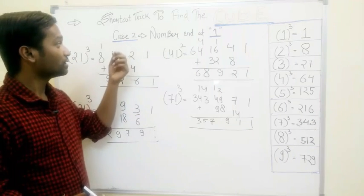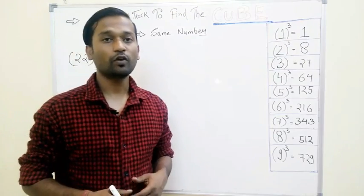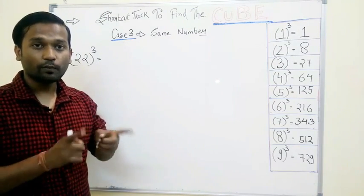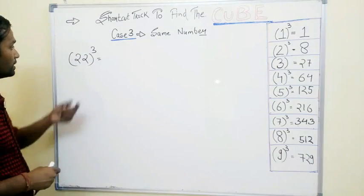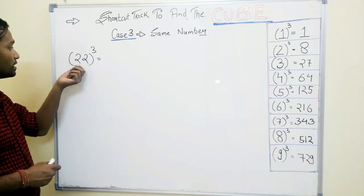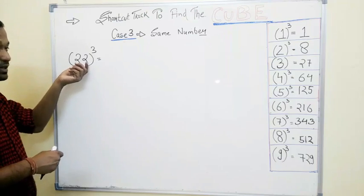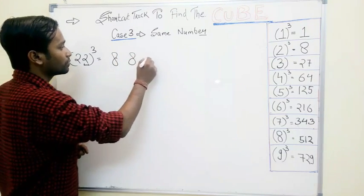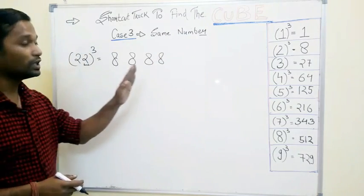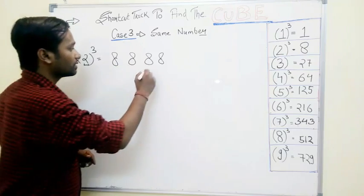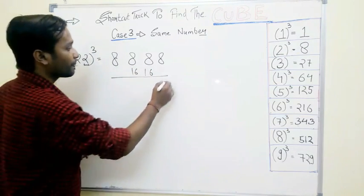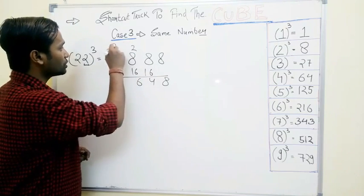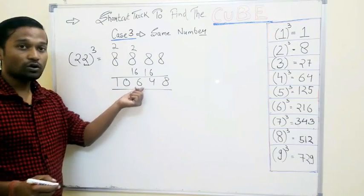This is our case number 2 — those numbers which end at 1. Now move on to case number 3: same-digit numbers like 22, 33, 44, 55, 66 where both digits are the same. Take example 22 cubed. Take either digit since both are same, so we take 2 and cube it — that is 8 — and write up to 4 digits. Leave the extreme right and extreme left and double these two numbers — that is 16 and 16 — and simply add: 16 and 8 is 24, carry 2; 16 and 8 is 24 plus 2 is 26, carry 2; 8 and 2 is 10. So our answer is 10648.